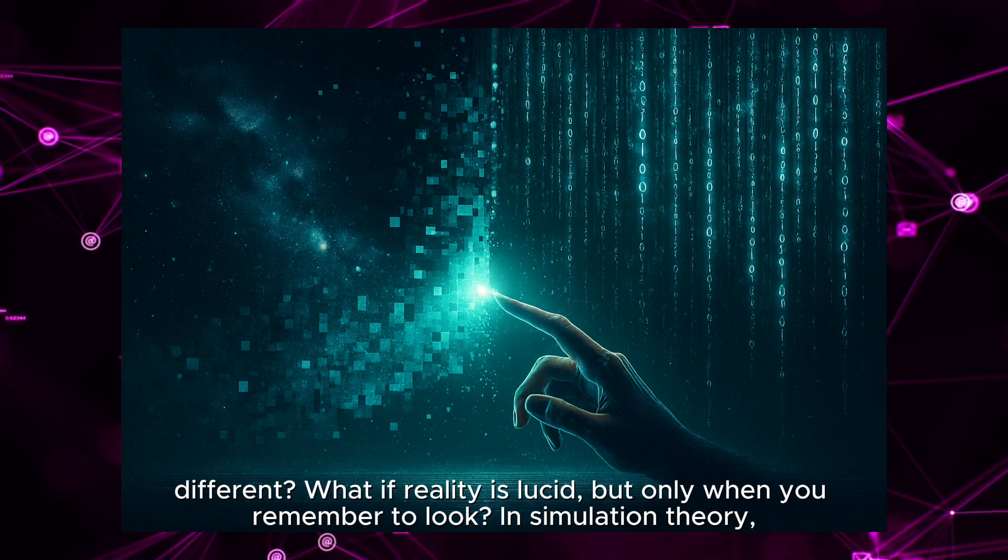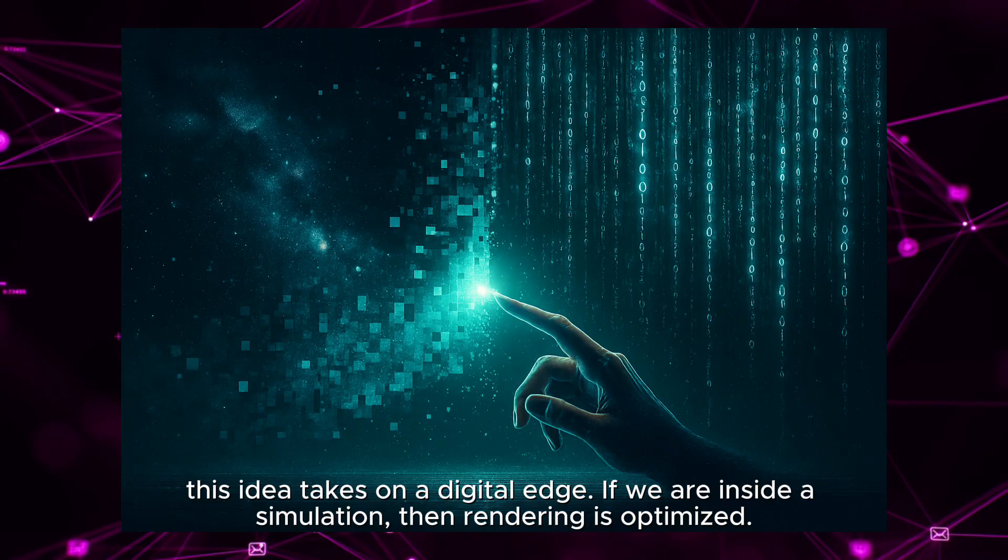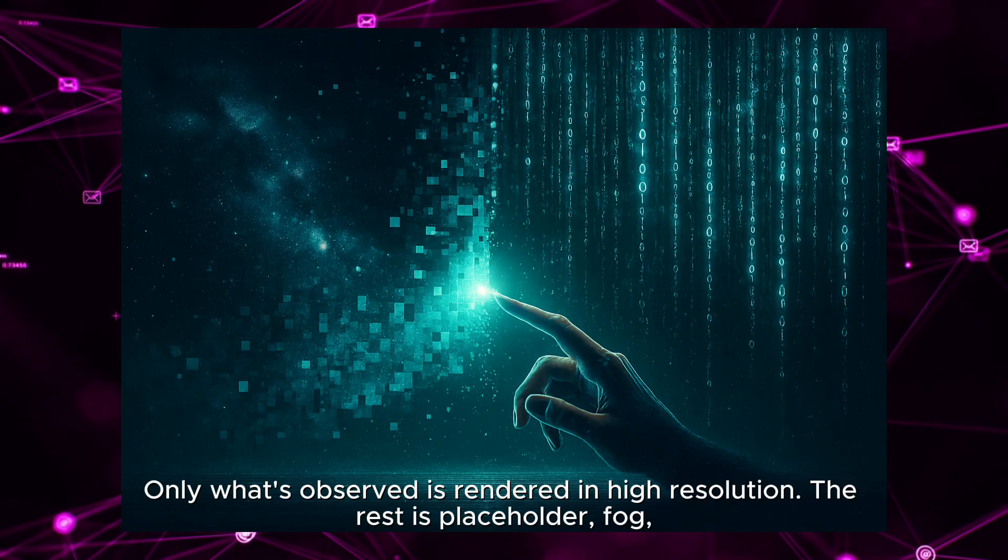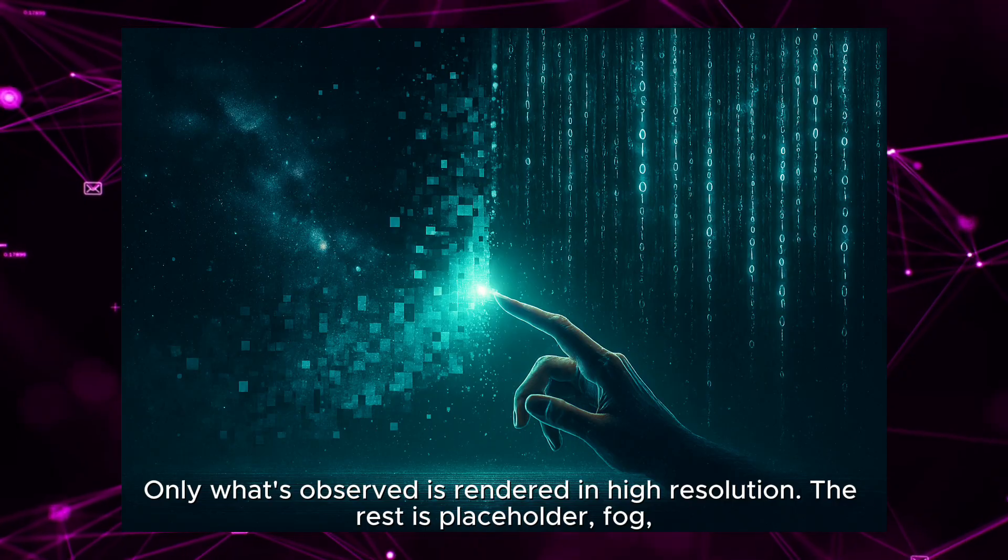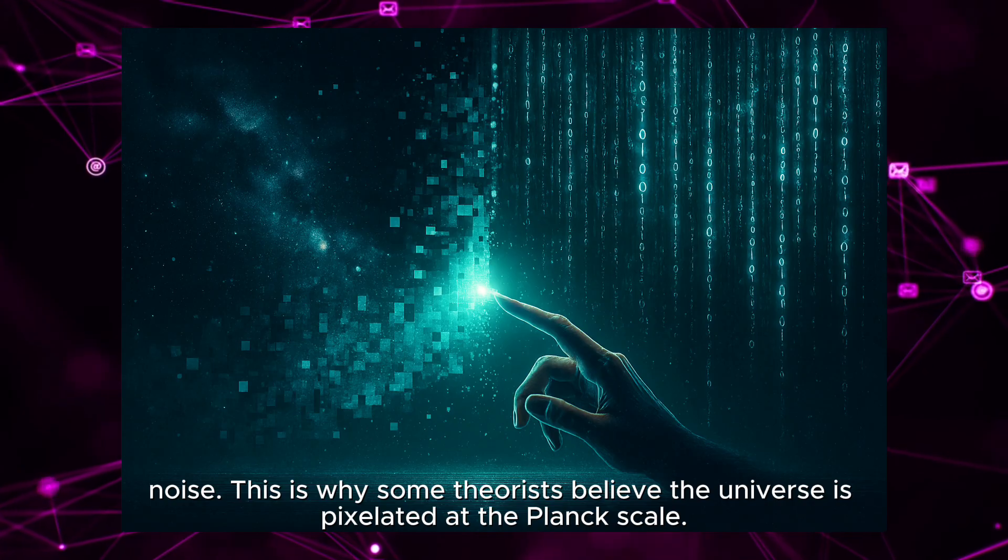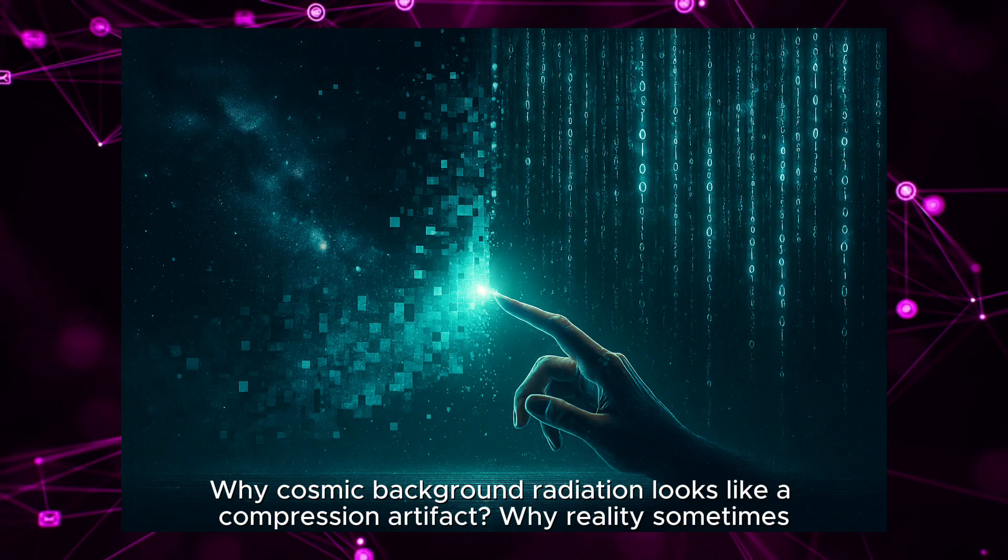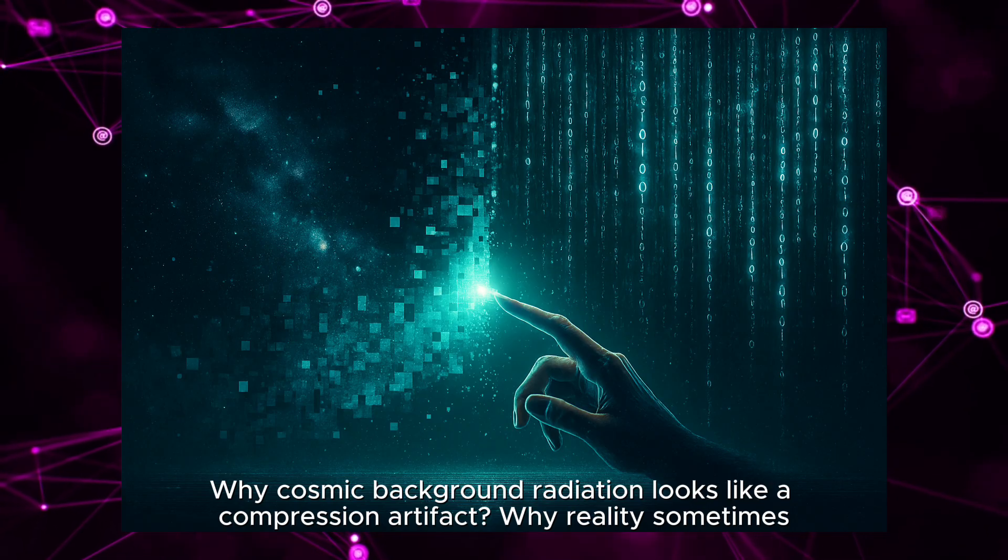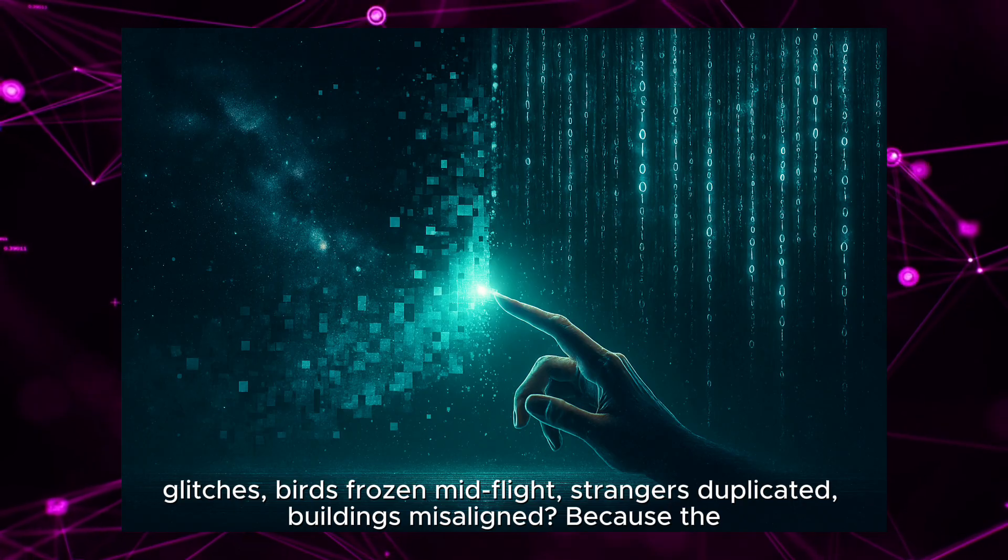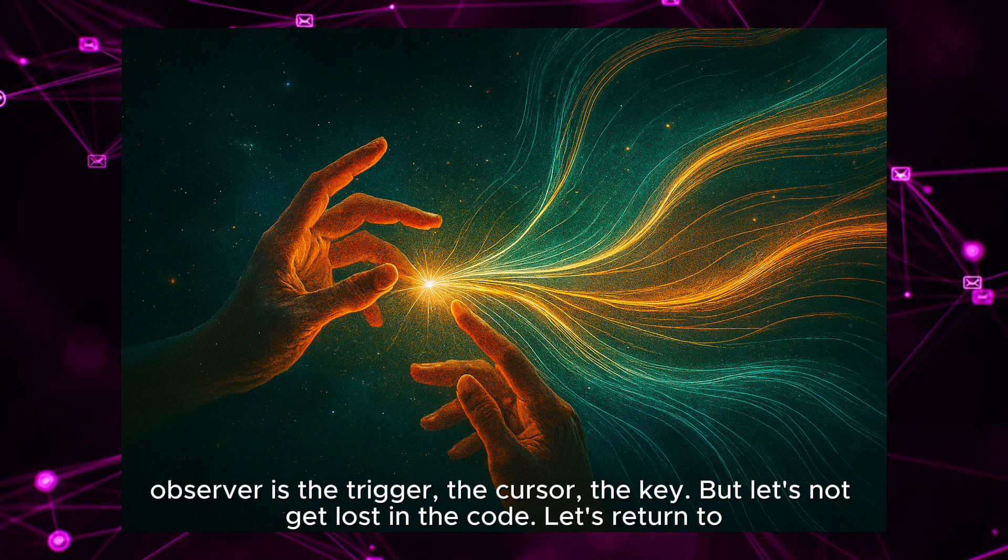In simulation theory, this idea takes on a digital edge. If we are inside a simulation, then rendering is optimized. Only what's observed is rendered in high resolution. The rest is placeholder. Fog. Noise. This is why some theorists believe the universe is pixelated at the Planck scale. Why cosmic background radiation looks like a compression artifact. Why reality sometimes glitches birds frozen mid-flight, strangers duplicated, buildings misaligned. Because the observer is the trigger, the cursor, the key.